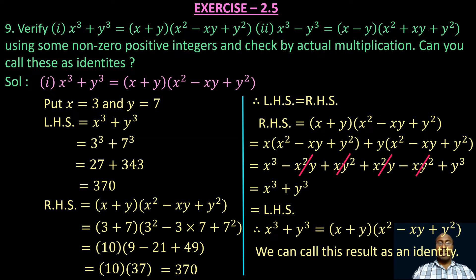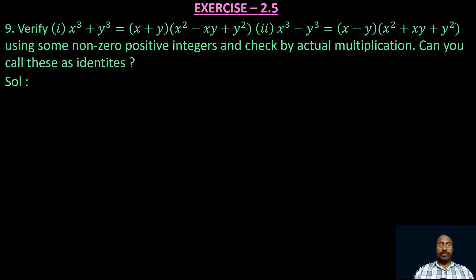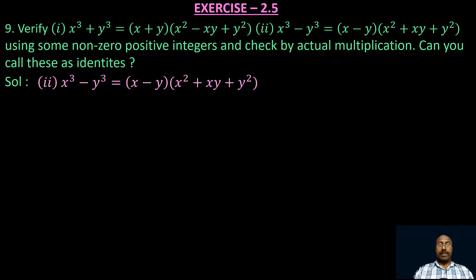If you take any non-zero positive integers, we get the values on both sides equal. That is why we can call this result an identity. Now let us take the second one: x³ - y³ = (x - y)(x² + xy + y²). In the same way as the previous one, we can prove this one. Put x = 5 and y = 4.